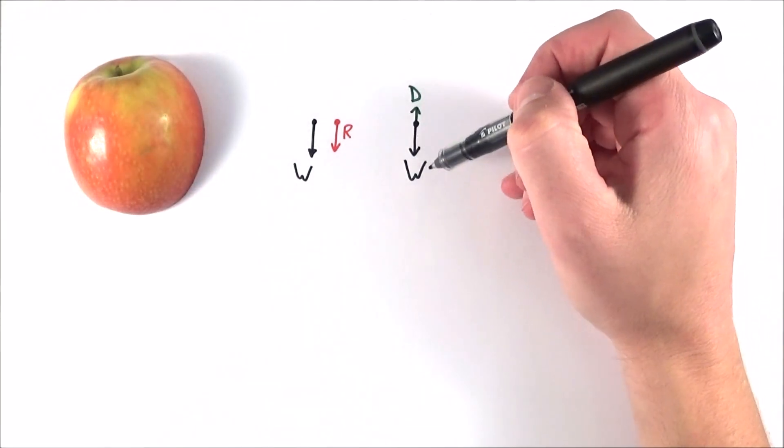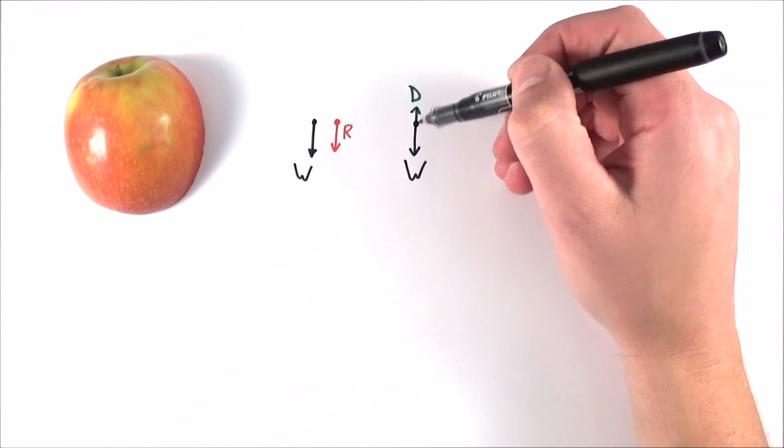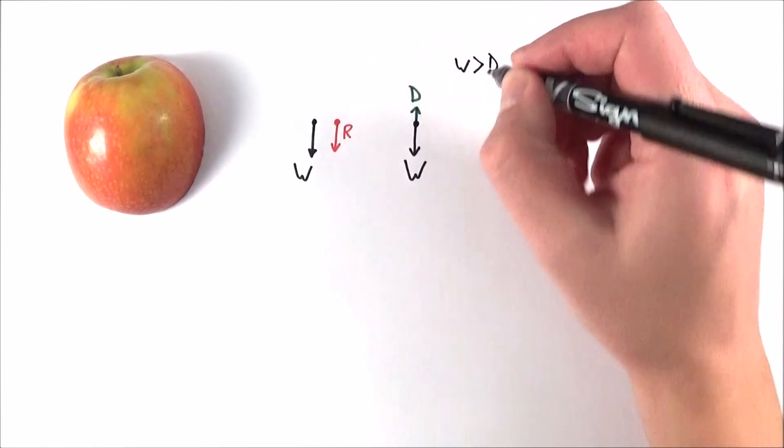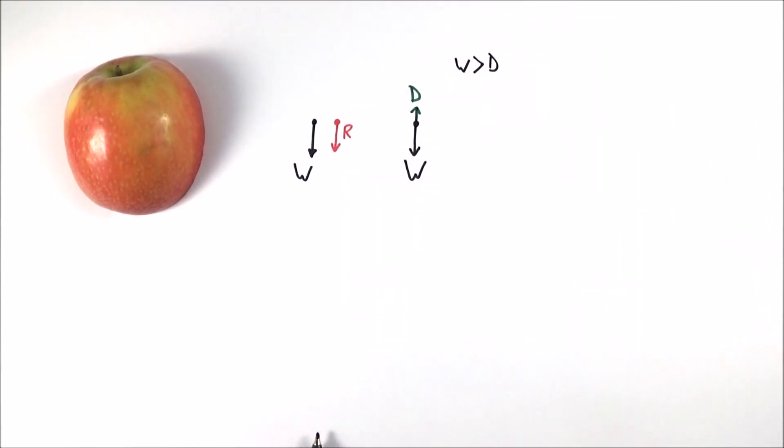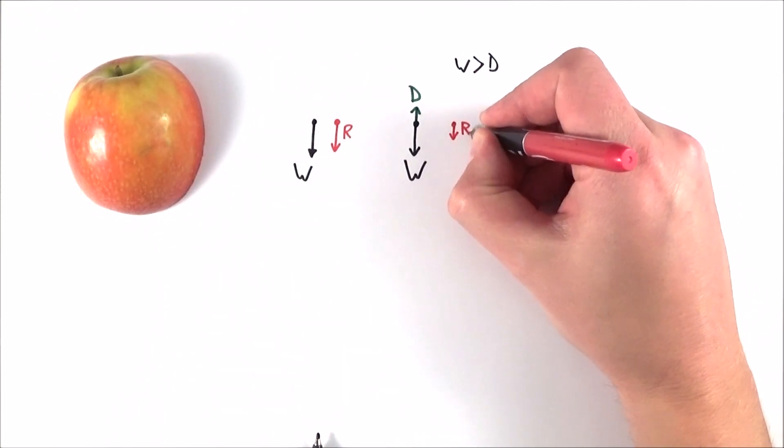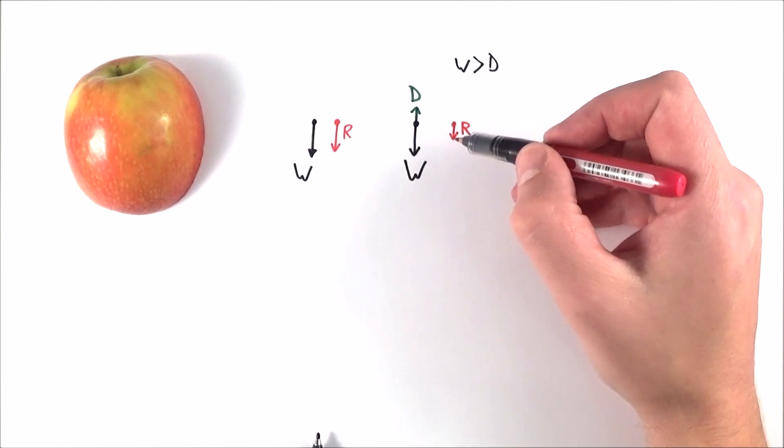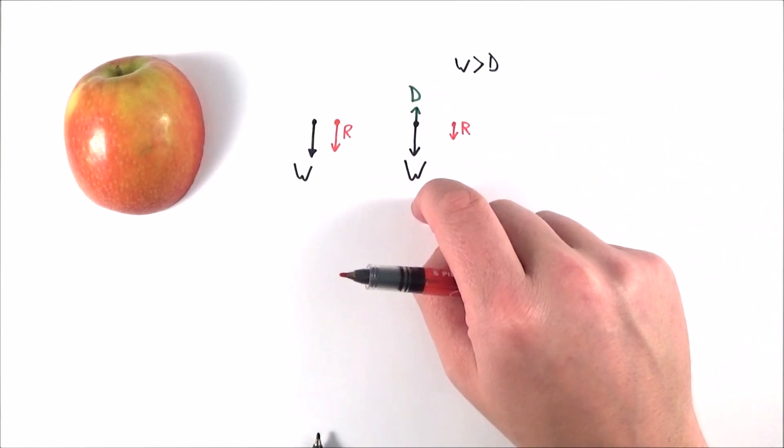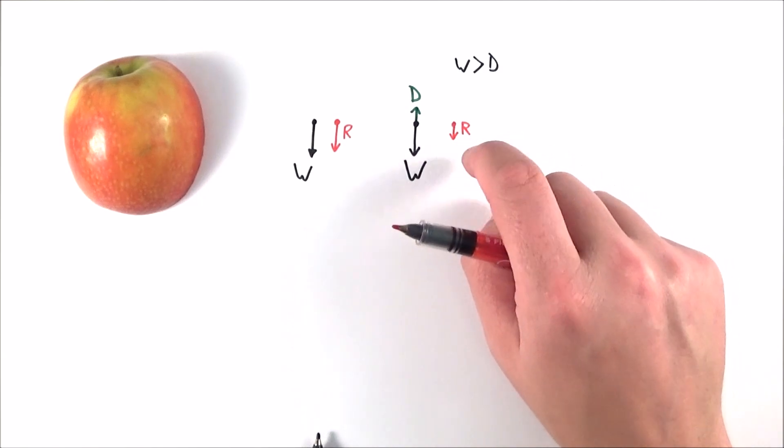Now what we can see is that at this time here, the weight is bigger than the drag force. So the value of the weight is bigger than the drag, and therefore there's still going to be a resultant force which is acting downwards. But we can see now that the resultant force is smaller than before, and therefore this object, which again has constant weight and constant mass, the acceleration is going to get smaller.